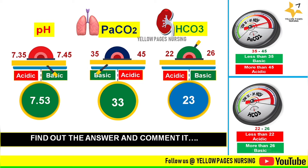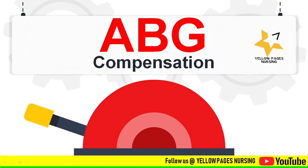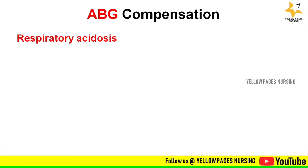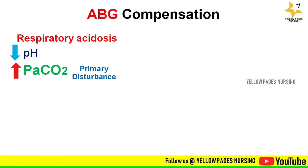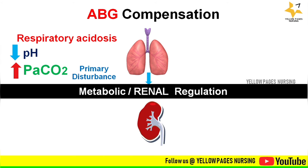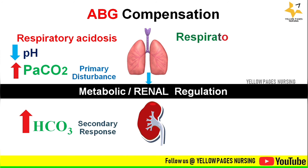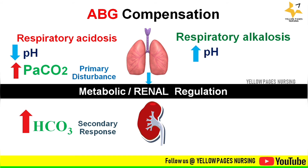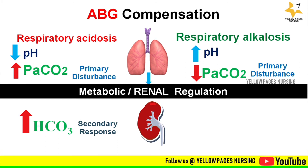Now let's move on to ABG compensation. For respiratory acidosis, there is a decrease in pH and an increase in PaCO2 — this increase in PaCO2 is the primary disturbance. To compensate, metabolic regulation takes place via the kidney, which increases the bicarbonate level — this is the secondary response. For respiratory alkalosis, there is an increase in pH and decrease in PaCO2 as the primary disturbance; the kidney decreases bicarbonate to compensate.